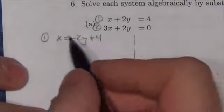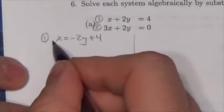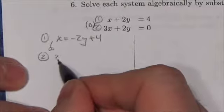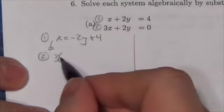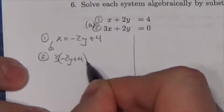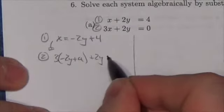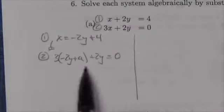For one particular point, when I substitute this into equation 2, that means 3 times x. Now x is going to be negative 2y plus 4, and then plus 2y will equal 0. This is equation 2: 3x plus 2y equals 0.